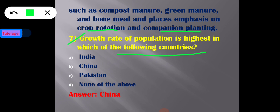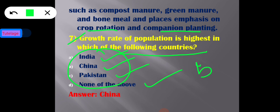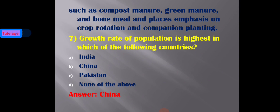The seventh question is: growth rate of population is highest in which of the following countries — India, China, Pakistan, or none of the above? Among India, China, and Pakistan, option B — China — is the correct answer.